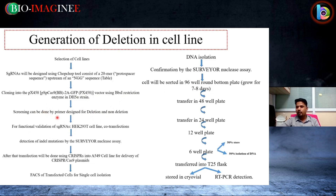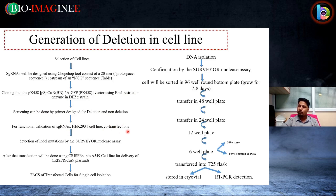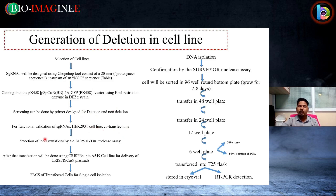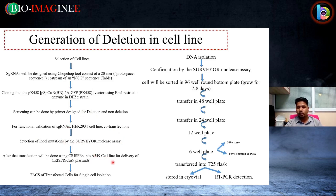Once confirmed that the desired deletion is in the DNA, proceed to transfection. For functional validation of single guide RNA, use HEK293T cell line for co-transfection using liposome-mediated reagent such as lipofectamine. The deletion or indel mutation will be confirmed using surveyor nuclease assay. After that, transfection will be done using CRISPR into the A549 cell line for delivery of CRISPR-Cas9 plasmid.